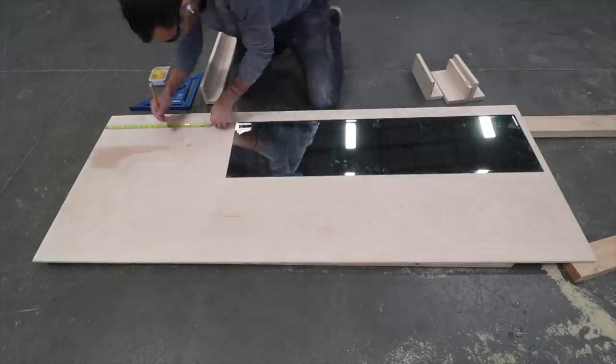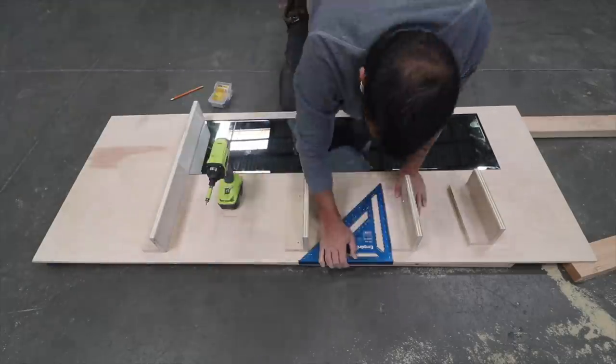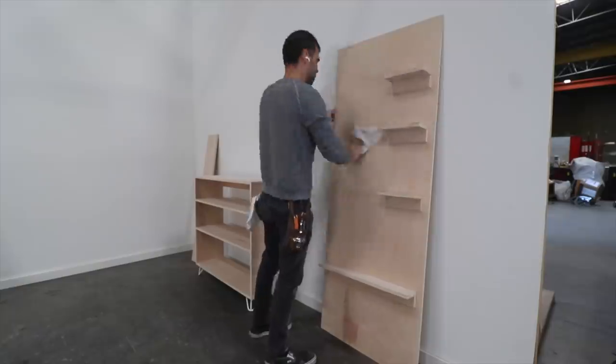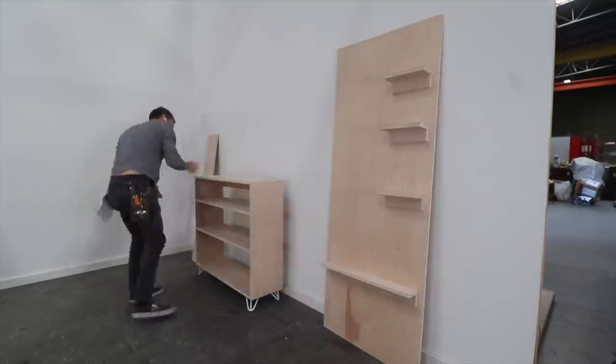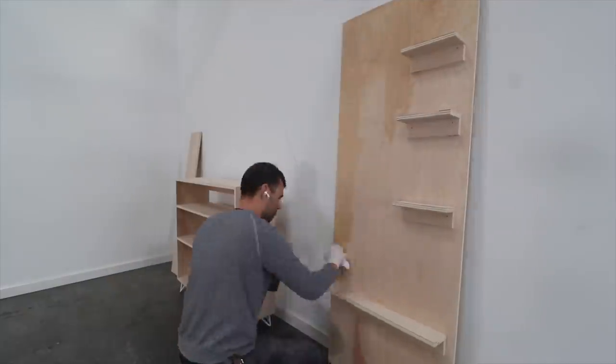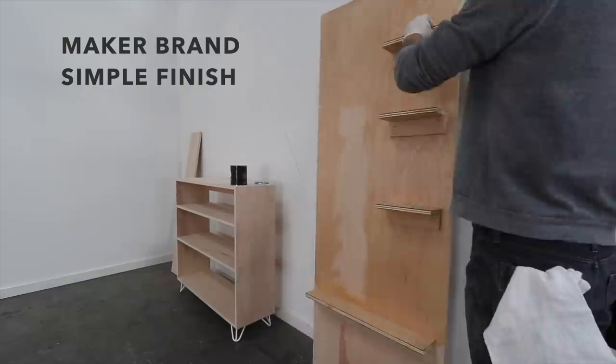I placed the mirror, but didn't attach it yet. I just used it to help figure out where I wanted the shelves to go. I wiped off all of the dust, and then finished the pieces with Maker Brand Simple Finish. It's a low VOC, plant-based finish that wears really well. It also brings out the color of the birch veneers.